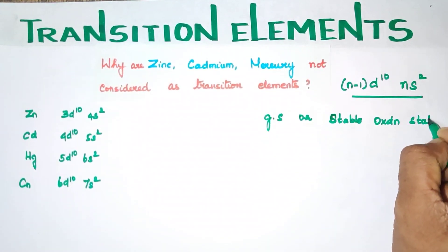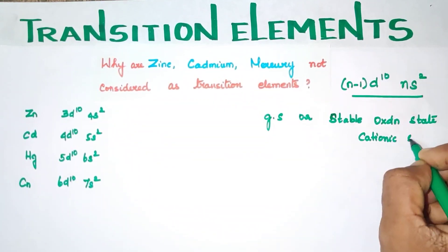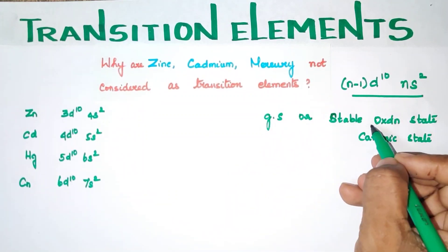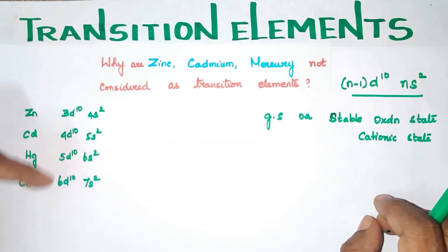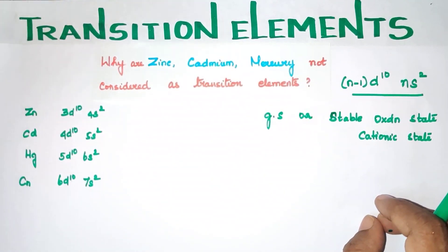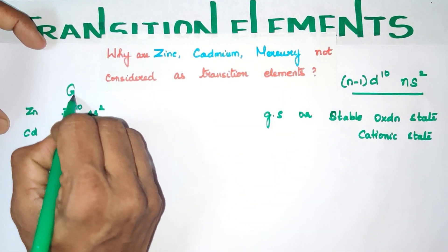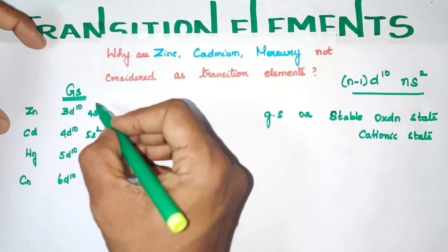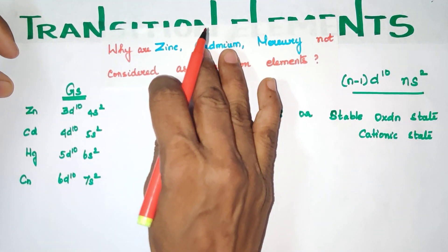So oxidation state, that is Cationic state, either in Ground state or in the Excited state or in the Stable Oxidation state.